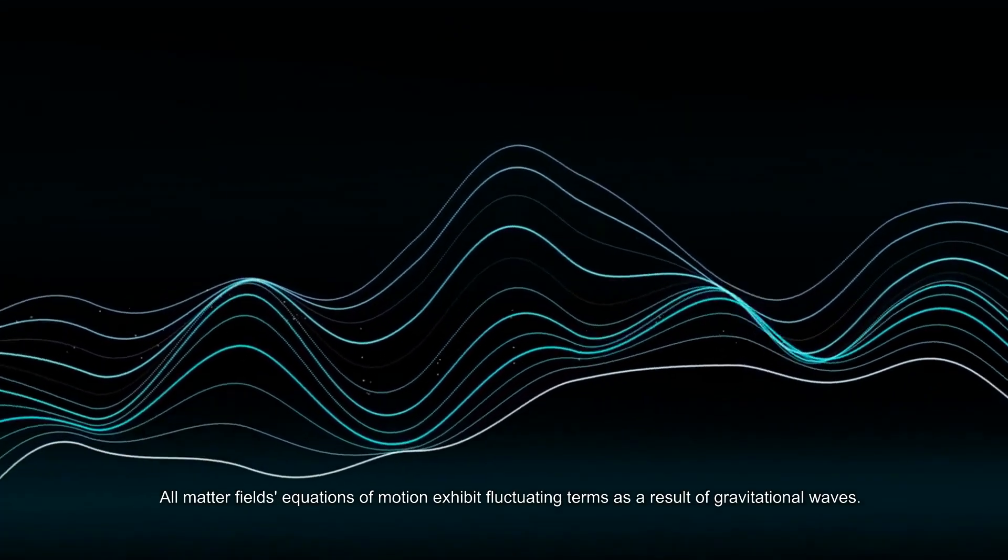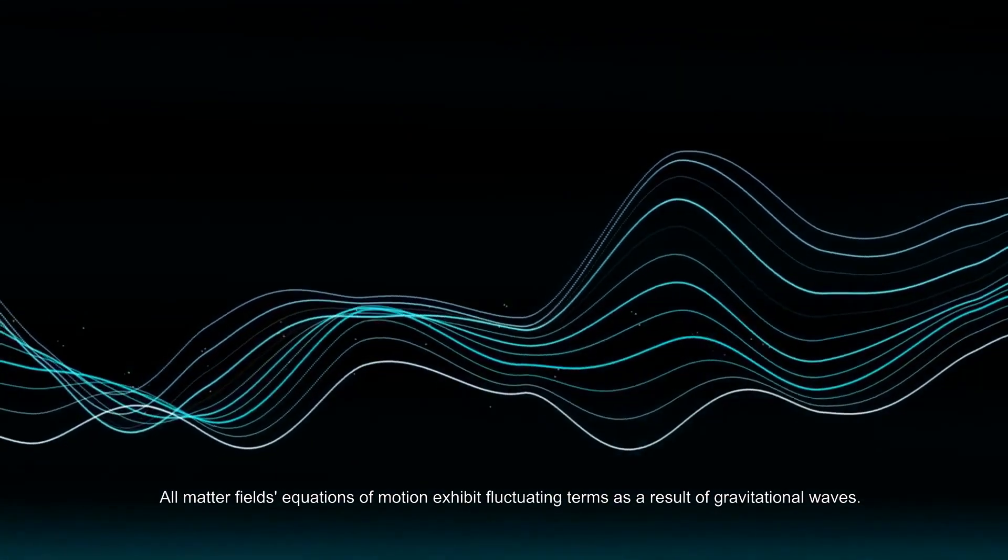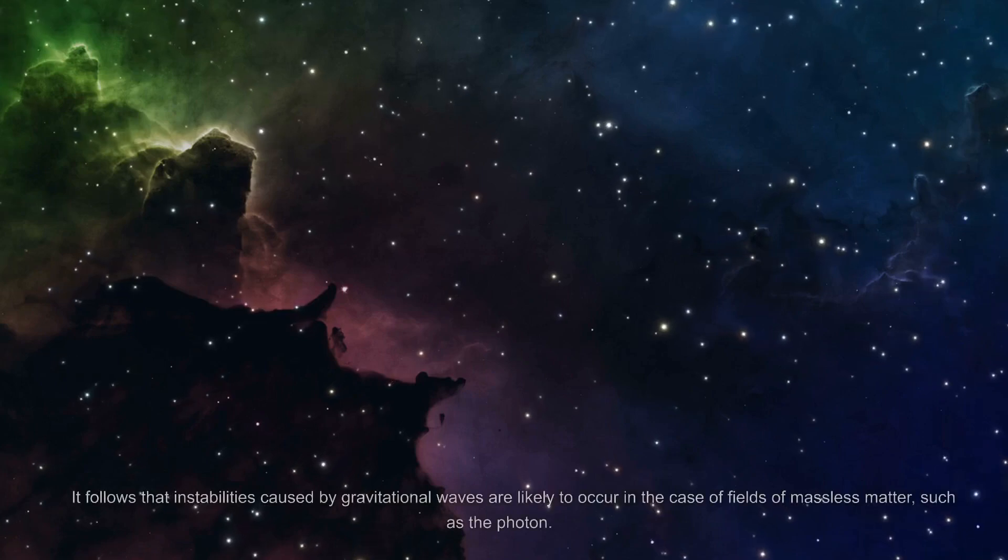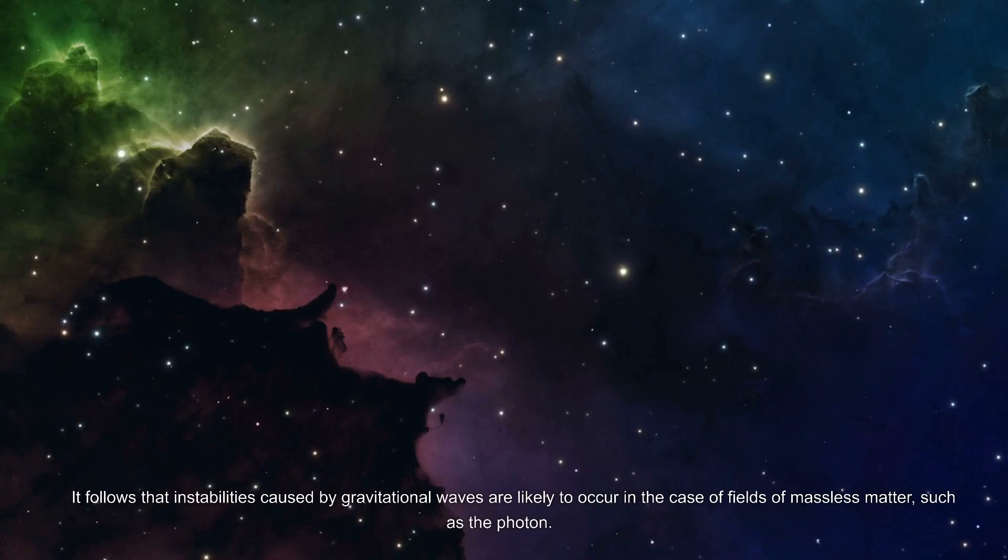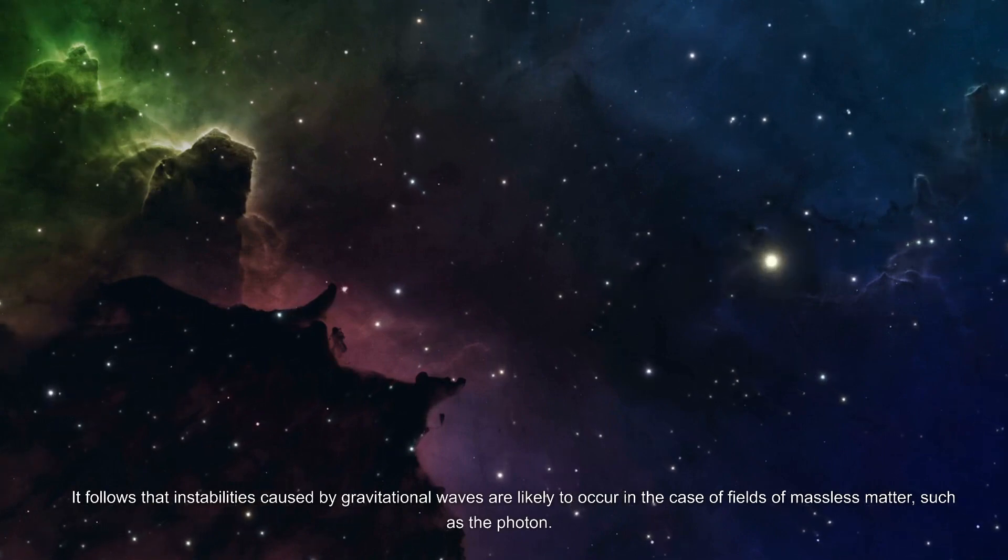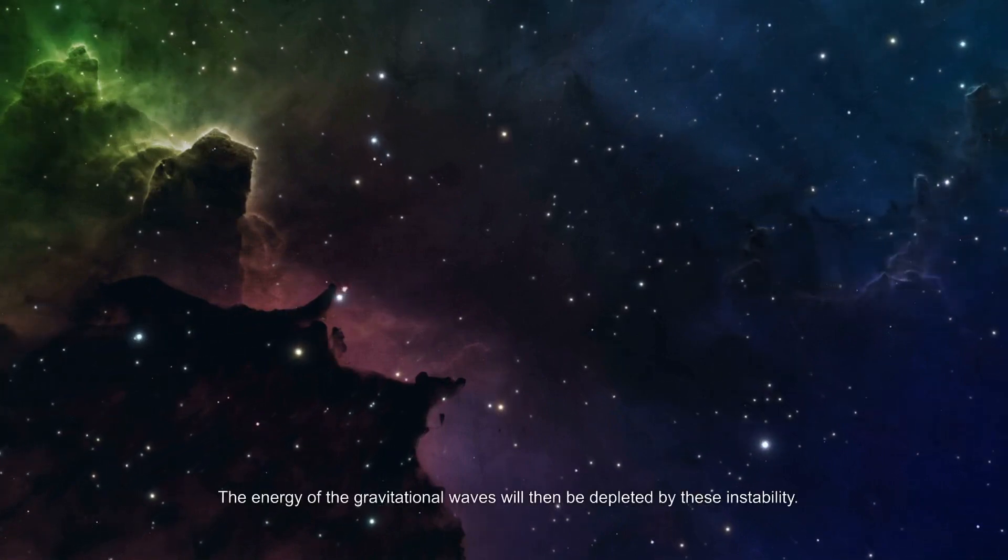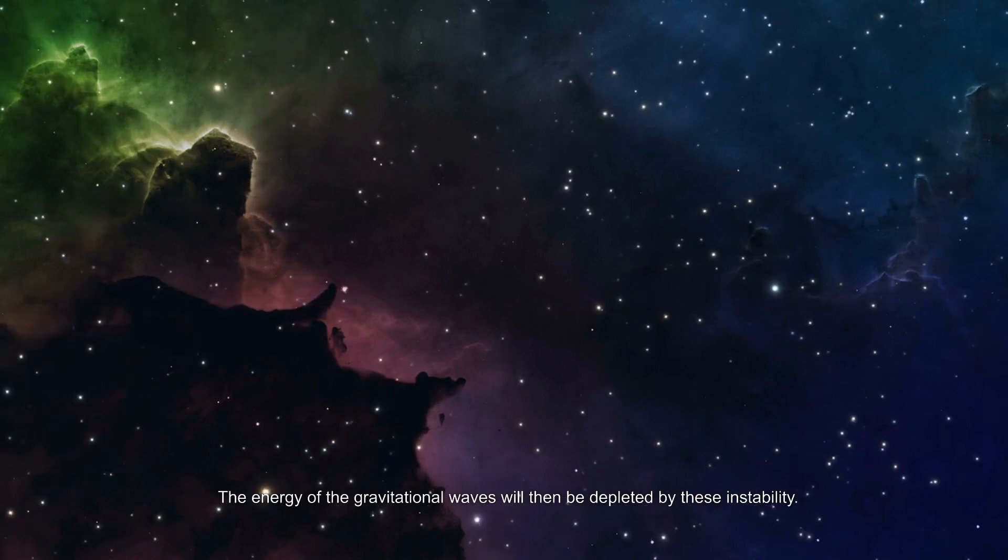It follows that instabilities caused by gravitational waves are likely to occur in the case of fields of massless matter, such as the photon. The energy of the gravitational waves will then be depleted by these instabilities.